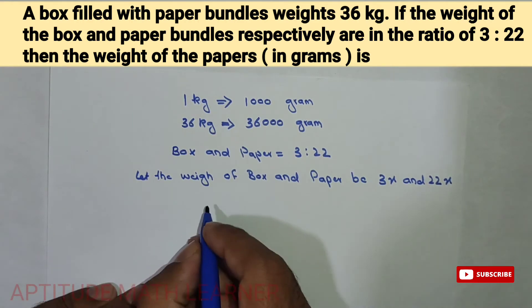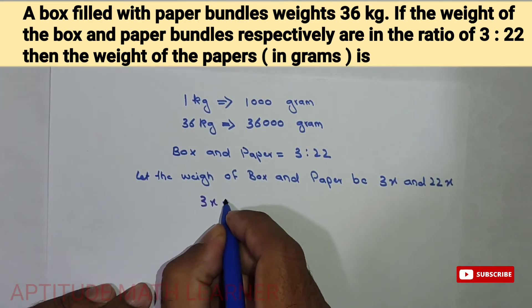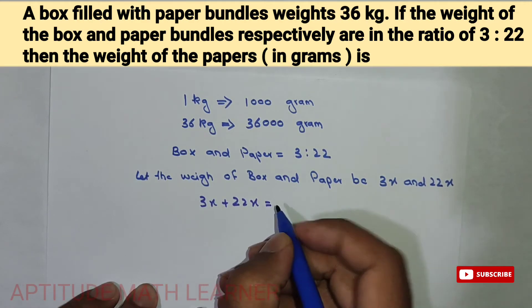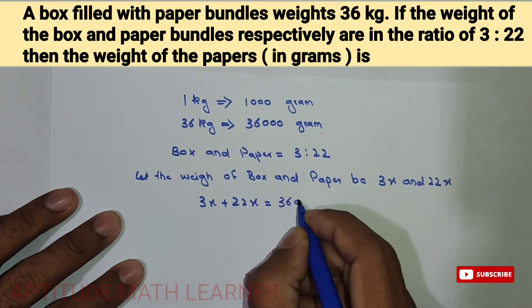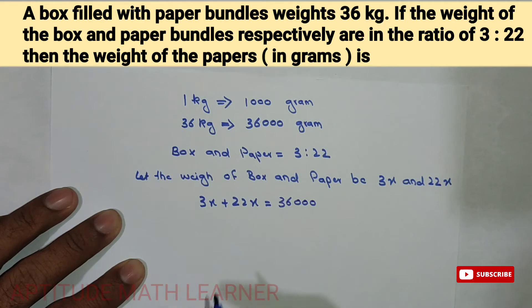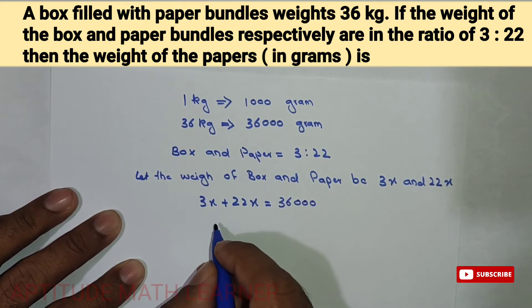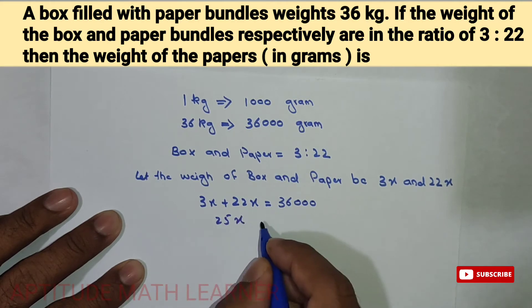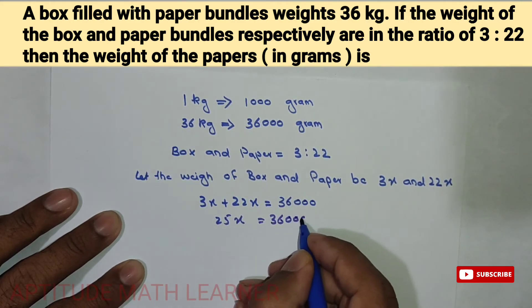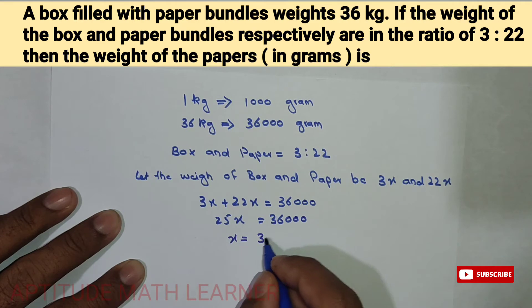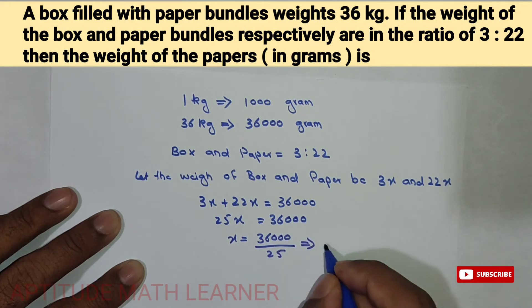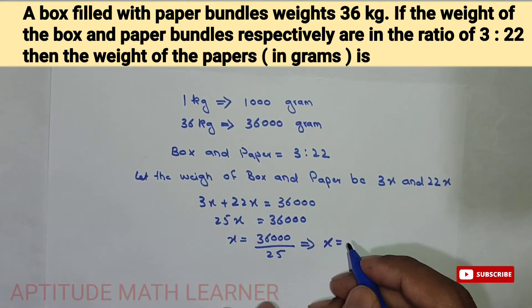So we have that is 3x plus 22x is equal to how much in grams? That is 36,000. So these are the weights. So what does it become? It becomes 25x is equal to 36,000. So x is equal to 36,000 upon 25. So dividing this we get the value of x, that is 1,440.